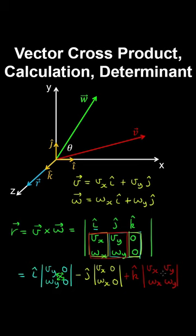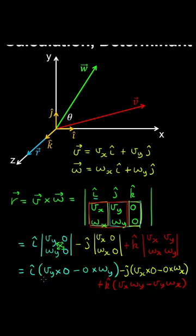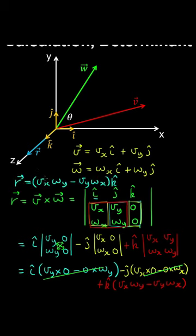The determinants are calculated by multiplying two elements and then subtracting the product of the other two elements, done for every minor matrix. This gives the following result: several terms are zero and the resulting vector R only has a component perpendicular to both V and W, so it must point in the z direction.